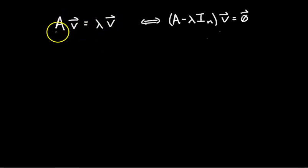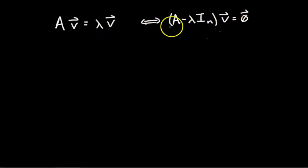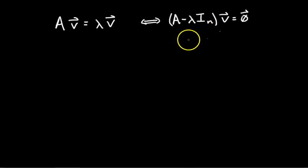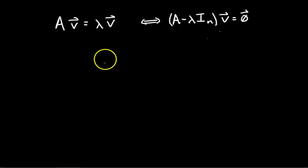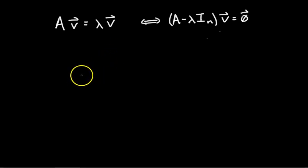In the last video we defined eigenvectors and eigenvalues and derived this expression, which we manipulated algebraically. We're going to use that eventually to compute eigenvectors and eigenvalues given some matrix A. But instead, what I want to do first is go over some geometric interpretations of eigenvectors and eigenvalues, where transformations are described geometrically so you can figure out the eigenvectors just by thinking about the transformation.